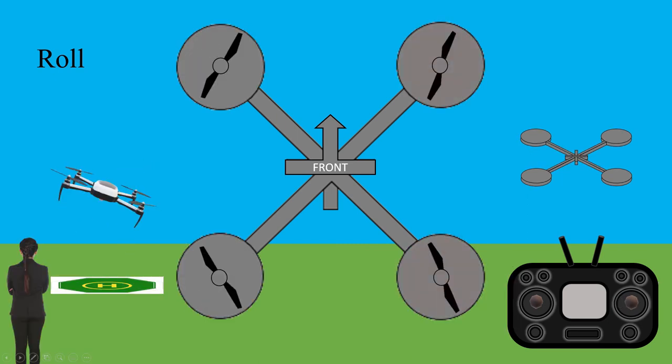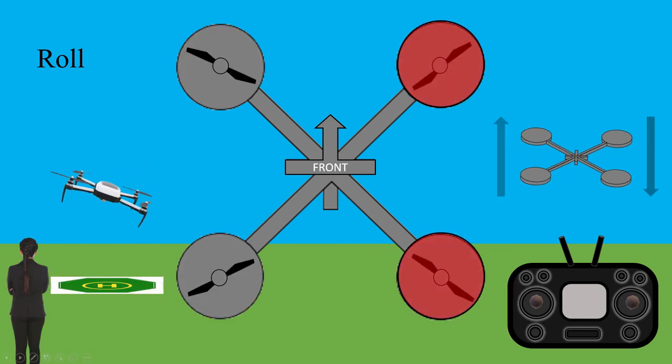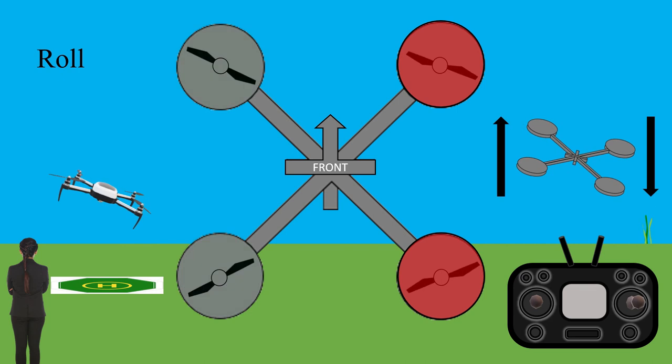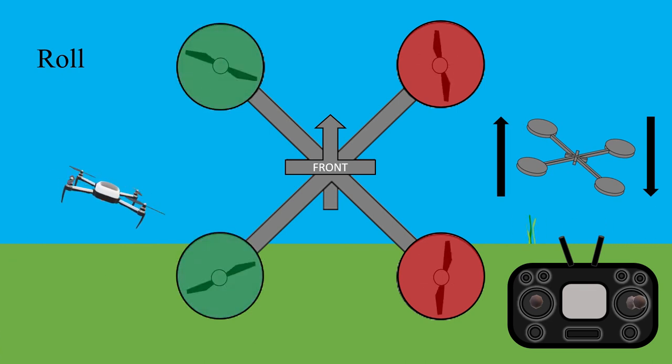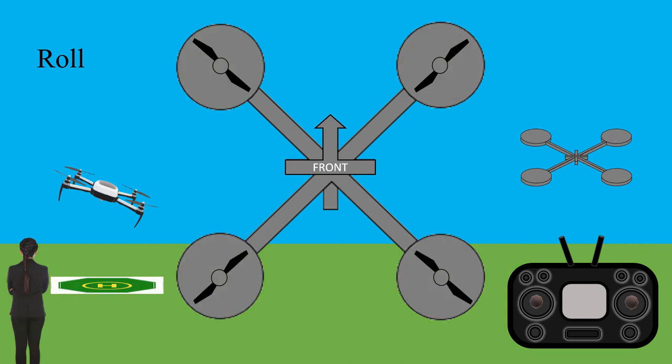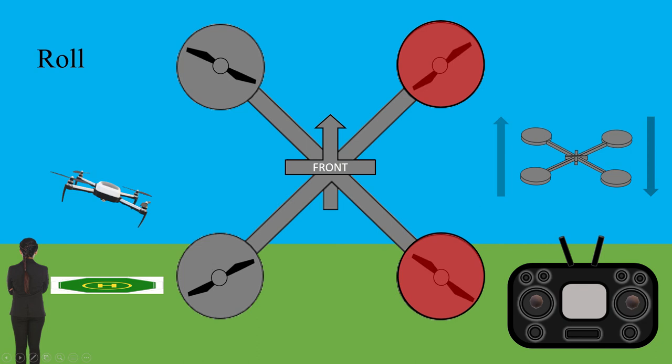When performing roll to the right, the motors that control the rotors on the right side of the drone, rotor 2 and rotor 3, will have their rotation speed decreased. At the same time, the motors that control the rotors on the left side of the quadcopter, rotors 1 and 4, will have their rotation speed increased.